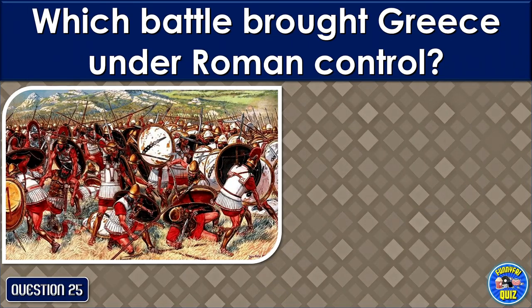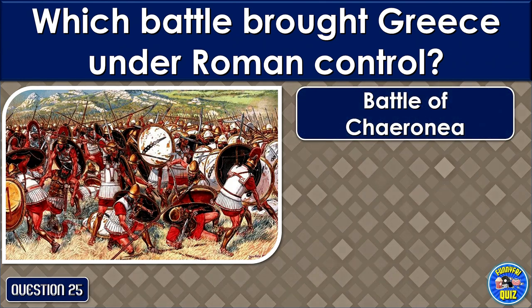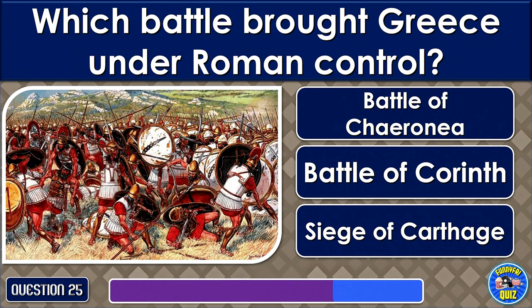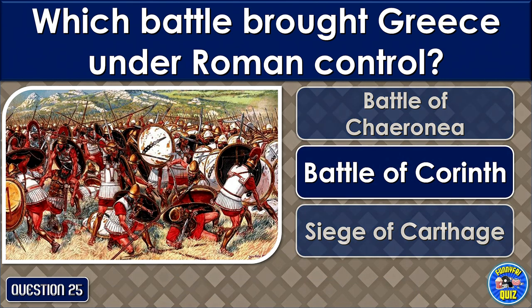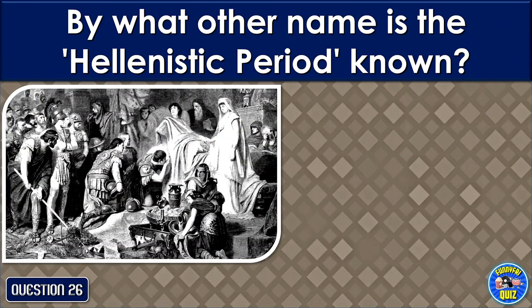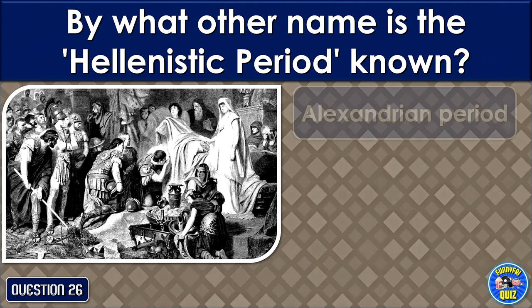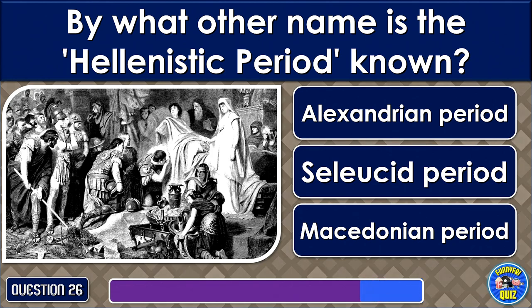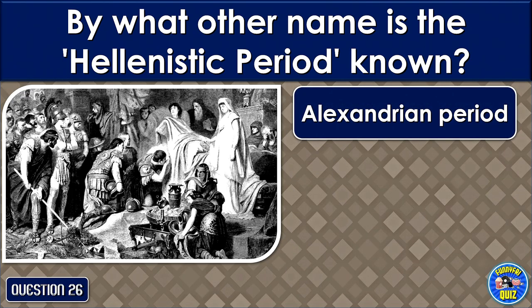Which battle brought Greece under Roman control? The Battle of Corinth. By what other name is the Hellenistic period known? The Alexandrian period.